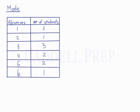So for example, there was one student who was absent once, one absent twice, three students were absent three times, two students were absent four times, two were absent five times, and one student was absent six times.